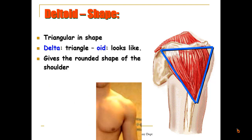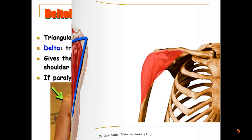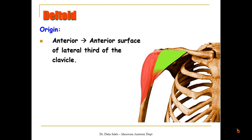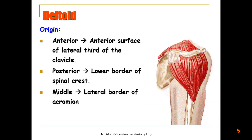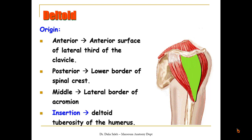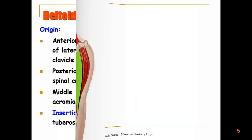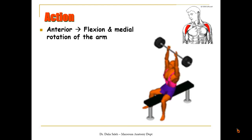The deltoid muscle gives the rounded shape of the shoulder. However, if it is paralyzed due to injury of its nerve supply, this will lead to flattening of the shoulder. It takes origin from the following points: its anterior fibers from the anterior surface of the lateral third of the clavicle; its posterior fibers, called the rear deltoid, from the lower border of the spinal crest; and the middle fibers from the lateral border of the acromial process. All three fiber groups insert at the deltoid tuberosity of the humerus.